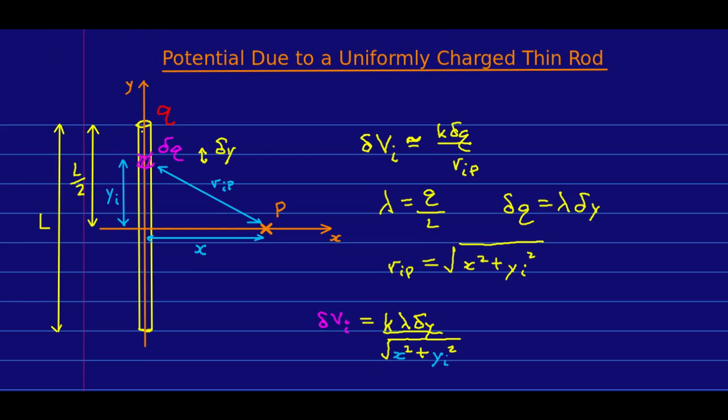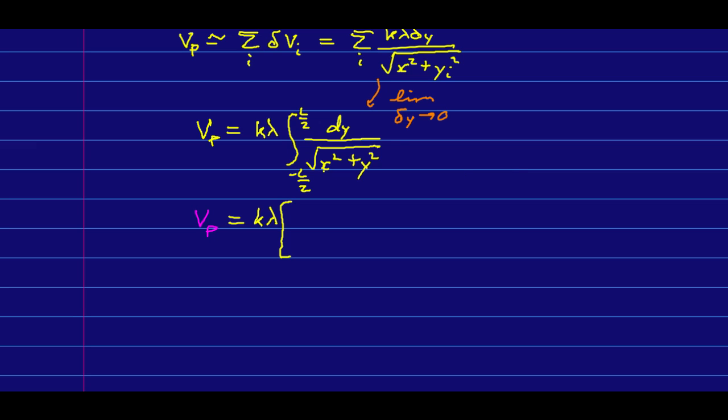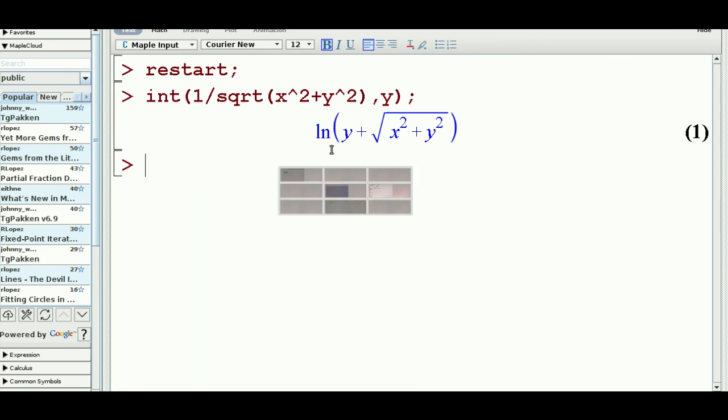And all the i subscripts have disappeared, because that's no longer a discrete variable, it's a continuous one. And again, I need to worry about what I'm integrating from and to. I'm going from y equals negative L over 2 to L over 2. Well, again, this is an integral that could be done by trig substitution, but I'm just going to throw it into maple. And there it is in maple.